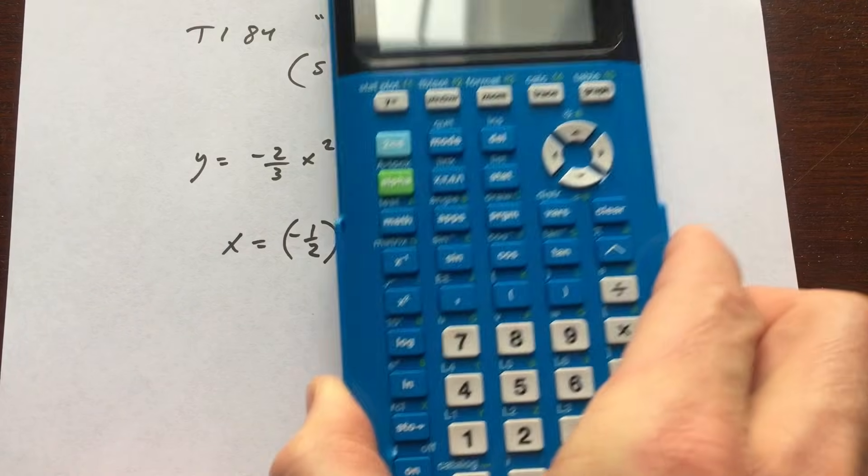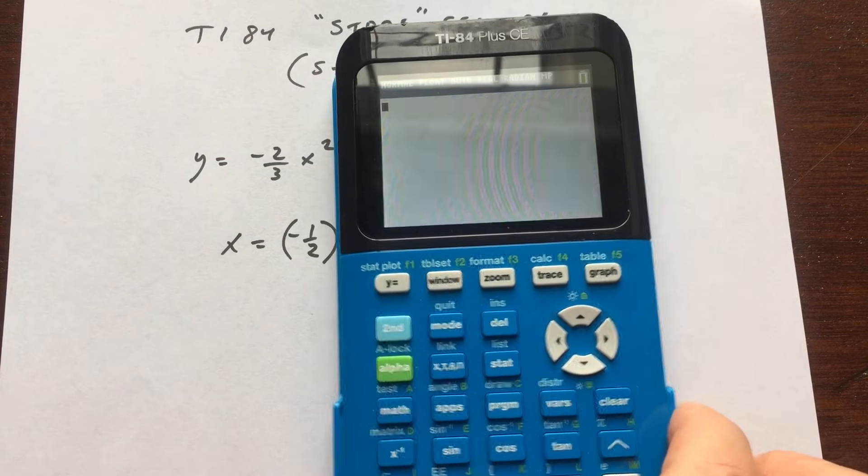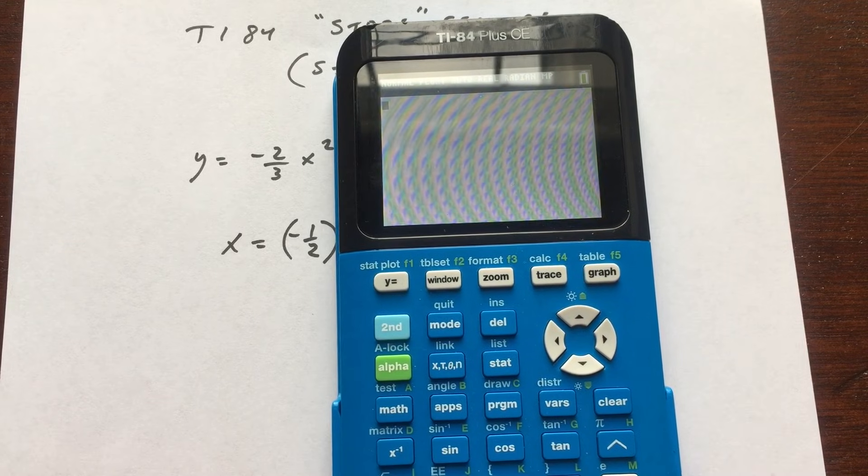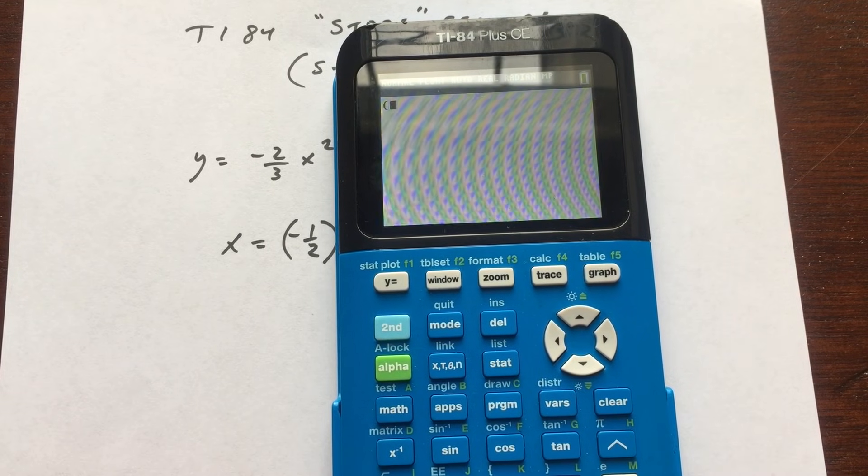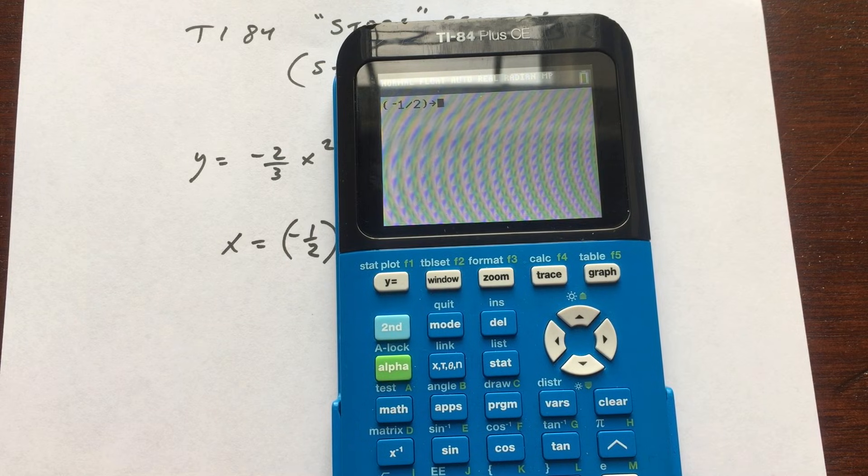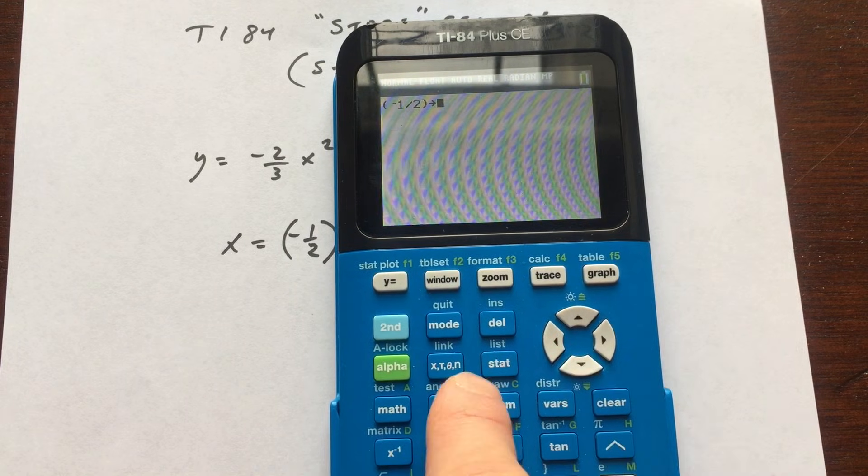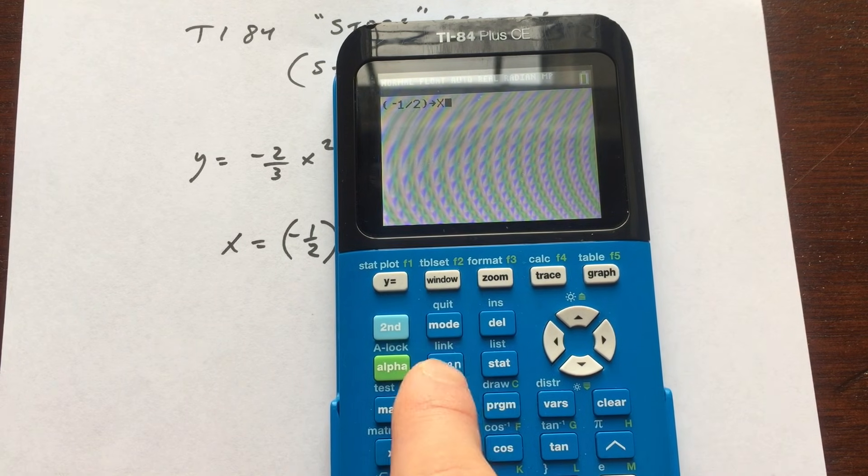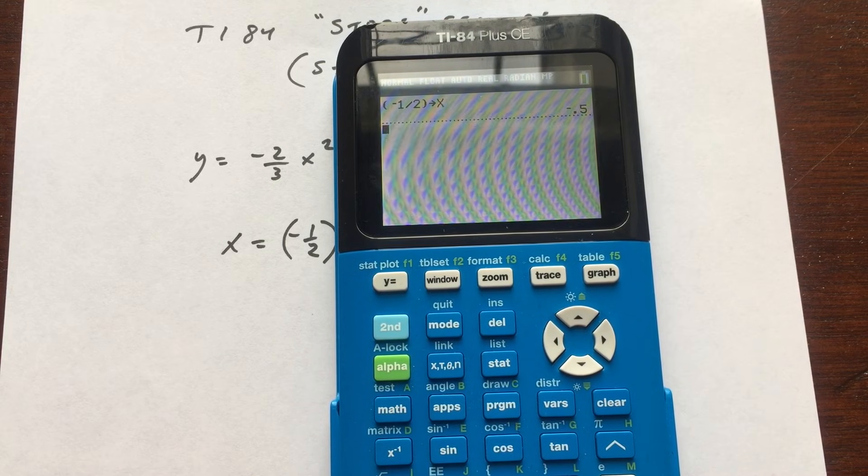So let me show you how it works. First thing you want to do is you want to type in the value that you want to store. So in this case, what I'm going to do is I'm going to type in negative one-half, so negative one divided by two. I'm just putting it in parentheses, and then I'm going to go ahead and use the store key. So I just press that. It shows the arrow, and I'm just going to put the variable here, X. So what that's doing is it's storing it under the variable X. So I'm just going to press enter.